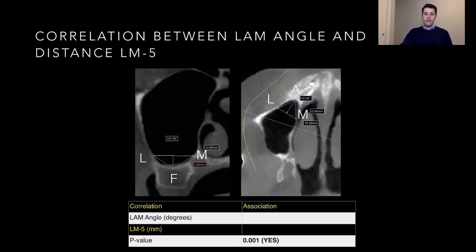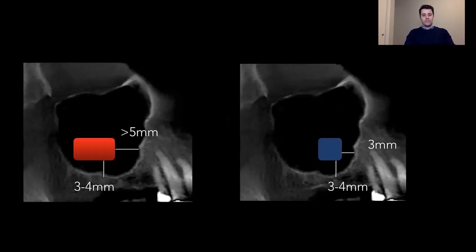There is a correlation between a narrow anterior angle and the distance between the lateral and medial wall at 5 millimeters from the floor of the sinus. So I don't have to take all measurements — I can simply measure the distance between the lateral and medial wall at 5 millimeters from the sinus floor to understand the anatomy. If I have a narrow sinus, the recommendation is to place the window as close as possible to the anterior wall and 3 to 4 millimeters from the floor of the sinus to make instrumentation easier.